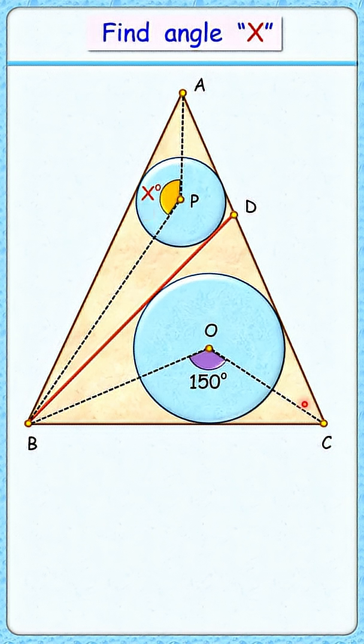To solve it, we'll use the theorem that from an external point, when we draw tangents to a circle, the line joining this external point to the center divides this angle equally.